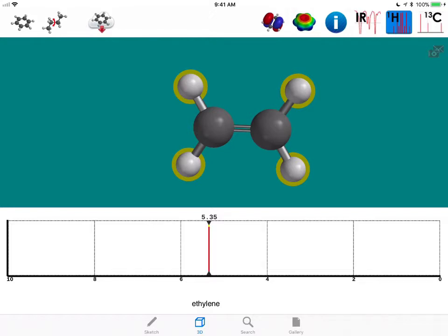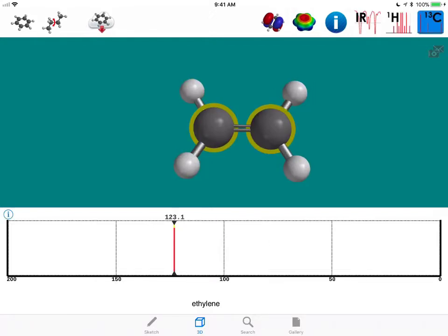And now if we look at the carbon NMR, we have an SP2 hybridized carbon. Both carbons are the same, so we see one peak. And the chemical shift at that peak on this simulated spectrum is 123.1 parts per million. Again, that's a significant shift away from an SP3 hybridized carbon, which was between about zero and 20 parts per million.